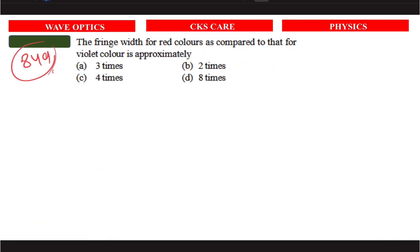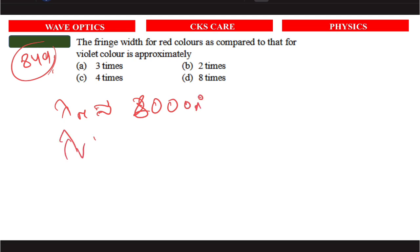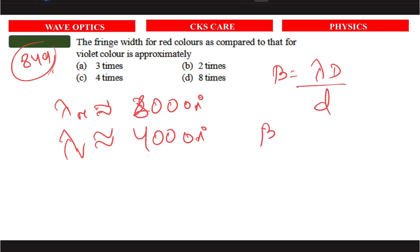The fringe width for red color as compared to that of violet color — red color has a wavelength of nearly 7000 Angstroms and violet is nearly 4000 Angstroms. Since β is directly proportional to λ, the fringe width for red is approximately twice that of violet.